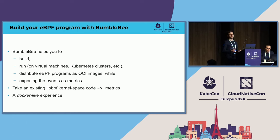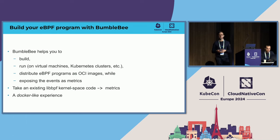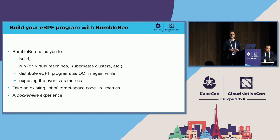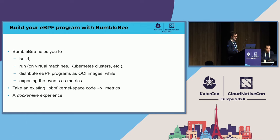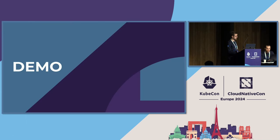We will use Bumblebee to package existing eBPF programs as OCI images — like Docker images — which you can push to local or remote registries. It's a cloud-native way to consume these little eBPF programs. You don't even need to think about user space responsibilities, because Bumblebee can auto-generate Prometheus metrics from kernel events, which is very useful since most cloud-native infrastructure is already running Prometheus.